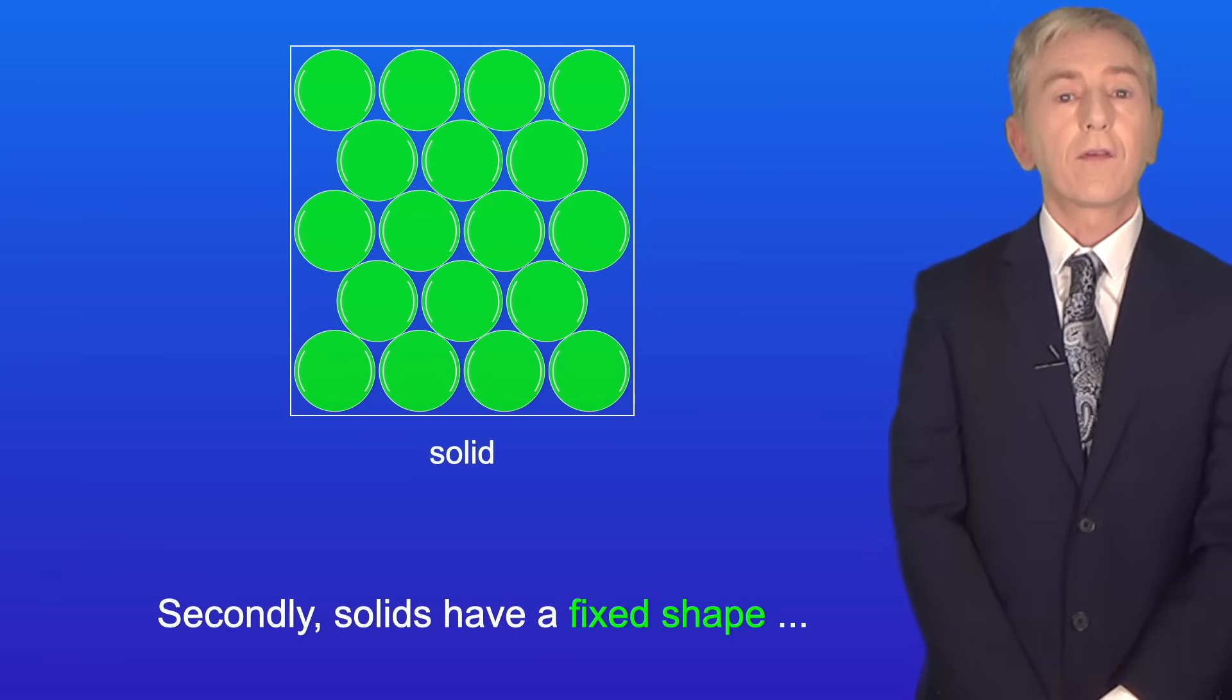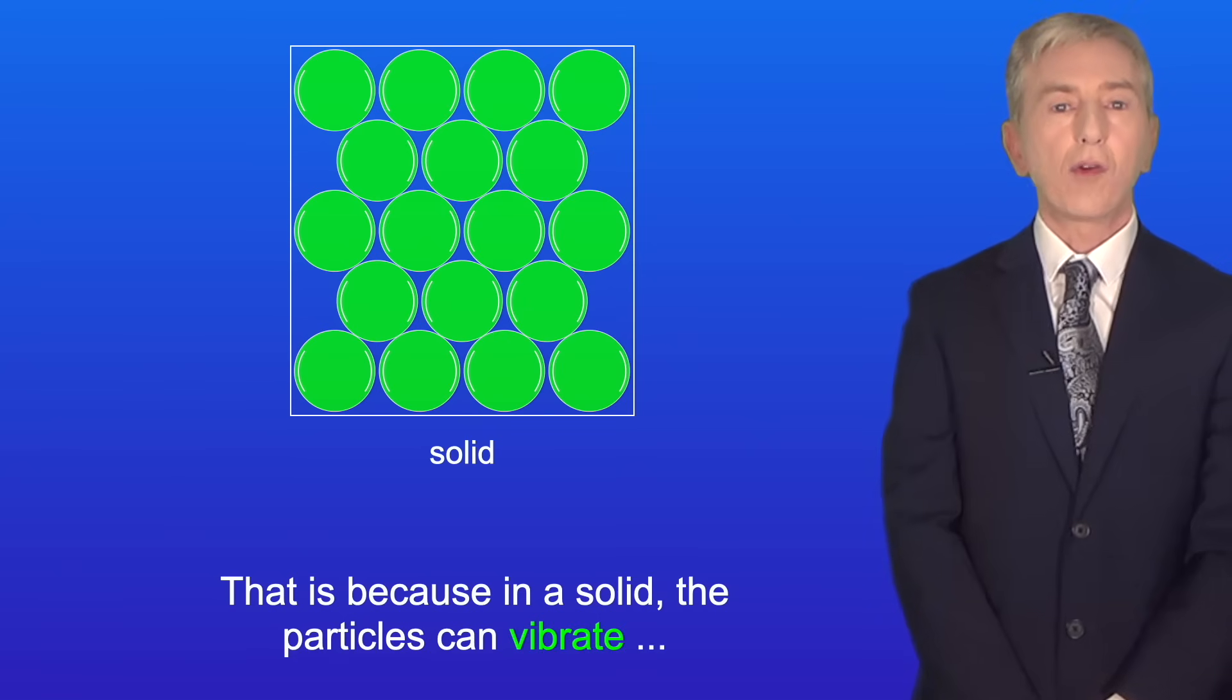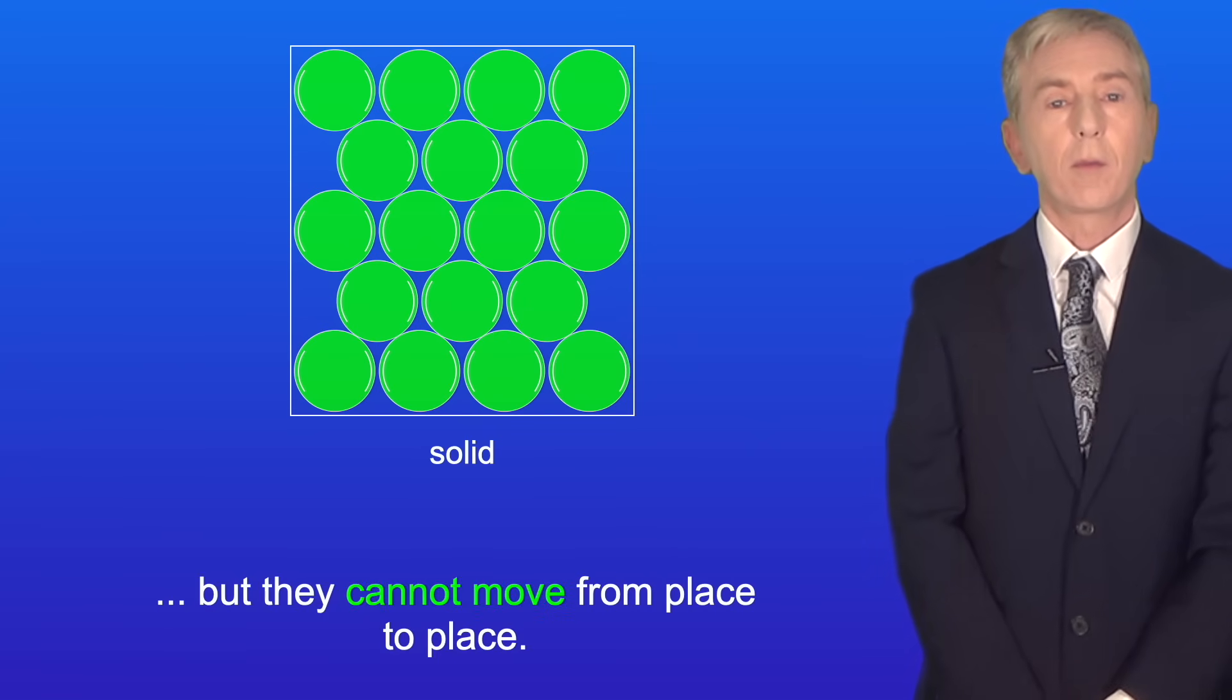Secondly, solids have a fixed shape and they cannot flow from place to place. That's because in a solid the particles can vibrate but they cannot move from place to place.